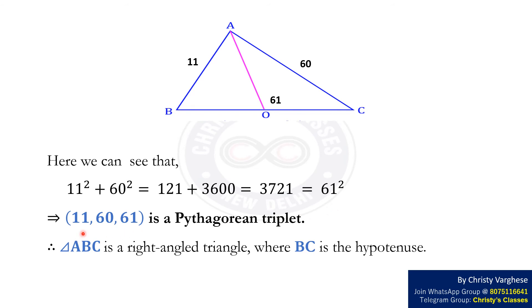This implies that 11, 60, 61 is a Pythagorean triplet. Therefore, triangle ABC is a right angle triangle where BC is the hypotenuse.